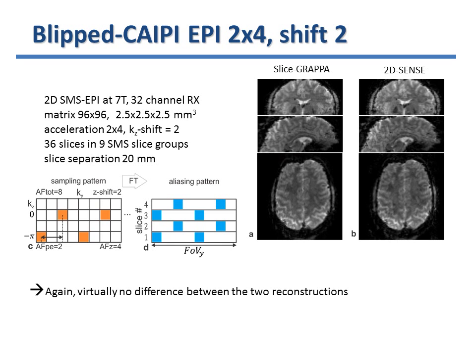Here we see the sampling pattern for a 2-fold in-plane and 4-fold multiband acceleration with a CAIPI shift of 2. The total acceleration factor is 8, resulting in 8 distinct peaks in the aliasing pattern. The CAIPI shift factor of 2 nicely distributes the aliased voxels over all slices and along the y-direction, which brings down the g-factor.